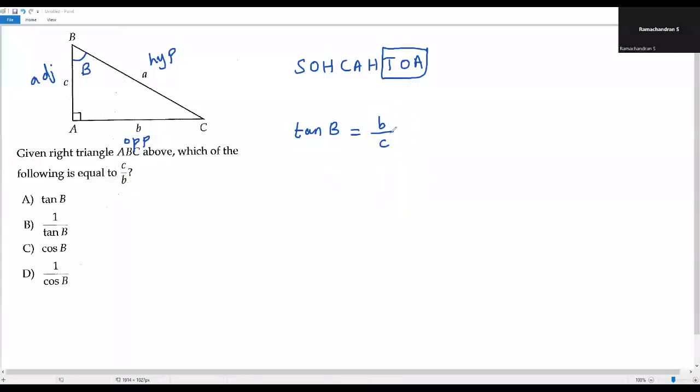So to get C over B, what I need to do is take reciprocal on both sides. If I take reciprocal for tangent B, it will become 1 over tangent B, and the reciprocal of B over C is C over B. I don't use a reciprocal identity or anything like that. It's very simple.